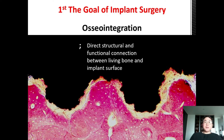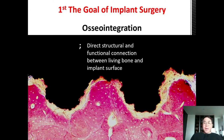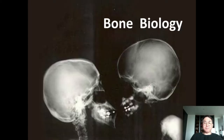As you all know, the first goal of implant surgery is to get successful osseointegration. The definition of osseointegration is a direct structural and functional connection between living bone and implant surface. During implant placement, we should maintain the vitality of bone to maximize the success rate of osseointegration. When regenerating bone around a bone defect area, we should understand basic and essential bone biology.